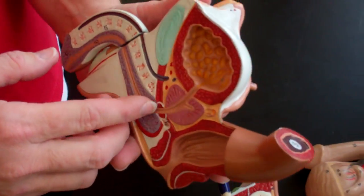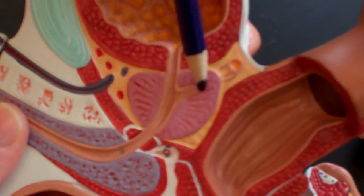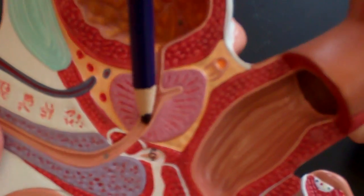If I turn it around, the ejaculatory duct comes through the prostate. So this is all prostate, this is the ejaculatory duct, and this is the urethra.